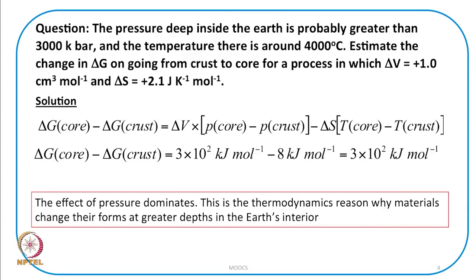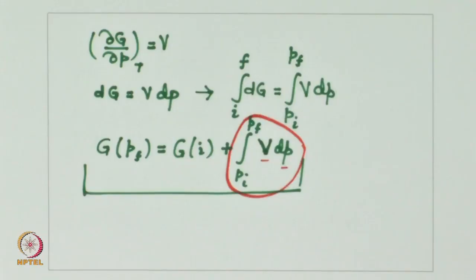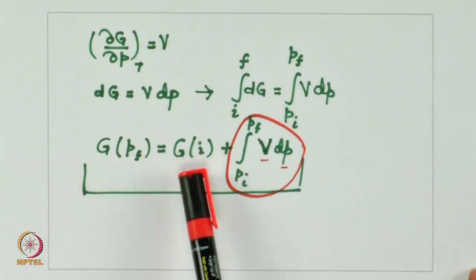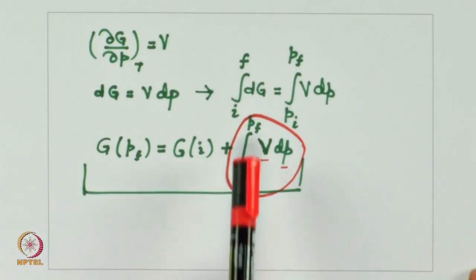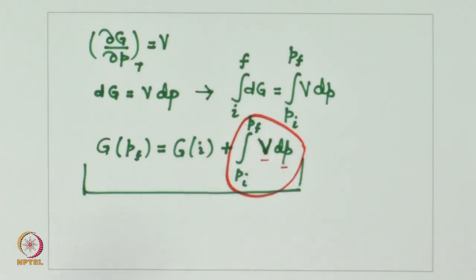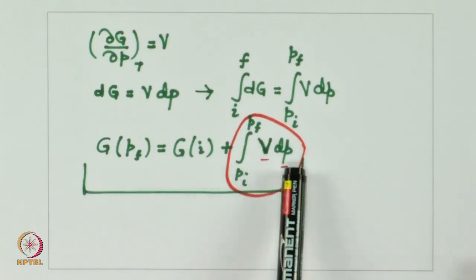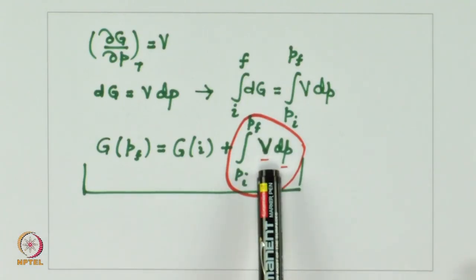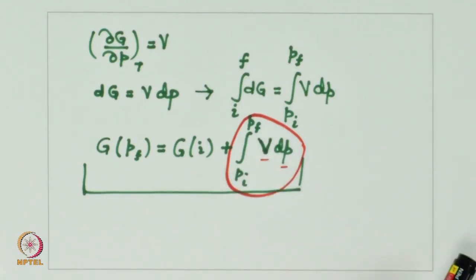Now, how about for gases? As discussed, the effect of pressure on Gibbs free energy is expected to be larger for gases because the volume of a gas is greater than that of a substance in its liquid or solid form. Thus, G(P_f) = G(P_i) + integral from P_i to P_f of V dP. Since volume depends on pressure for a gas, we need to substitute the pressure dependence of volume — which we can do conveniently for an ideal gas using the ideal gas equation.